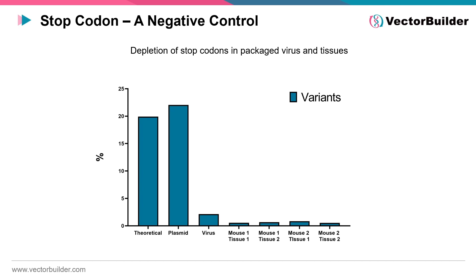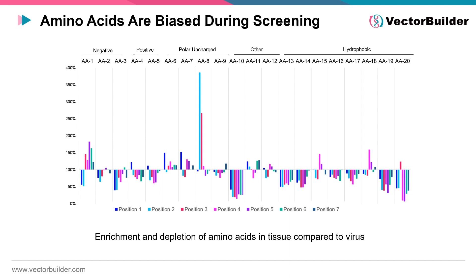One way to verify that a random peptide display library screen has been conducted successfully is to look for the presence of stop codons in tissues. Stop codons will be depleted in tissues compared to the library, as their presence would produce an AAV capsid unable to assemble properly or enter tissues. The presence of stop codons in tissues indicates cross-packaging between AAV serotypes, which would skew the true results. Similarly, amino acids are differentially enriched in specific tissues compared to the packaged virus library, providing useful insights for rationally designing peptides for target tissues or identifying novel serotypes with desirable properties.